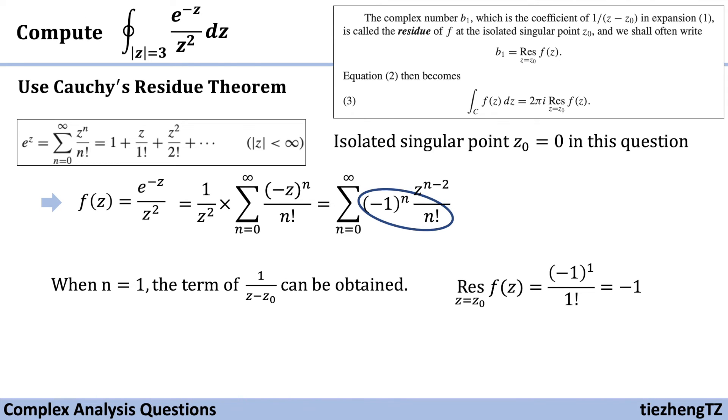Based on Cauchy's Residue Theorem, we know the residue of function f at the isolated singular point z₀. That point is within the given range |z|=3, which represents a circle with center at the origin.